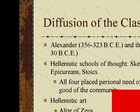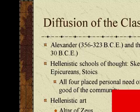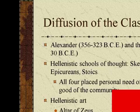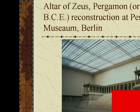All four Hellenistic schools place the personal needs of individuals over the good of the community. Hellenistic arts include the Altar of Zeus, Apollo Belvedere, Nike of Samothrace, and Laocoön and His Sons.